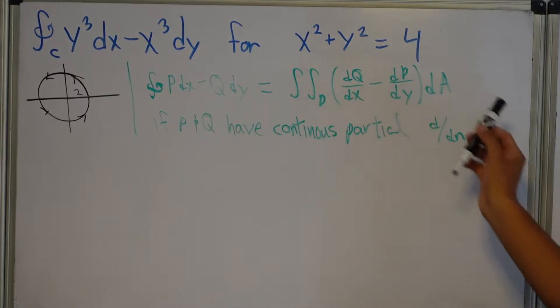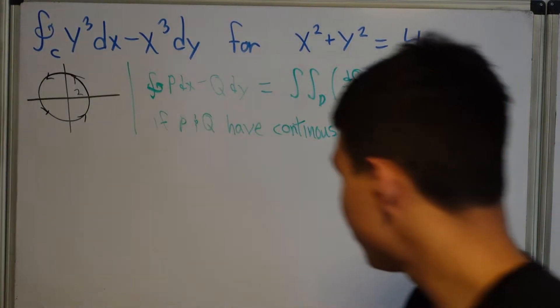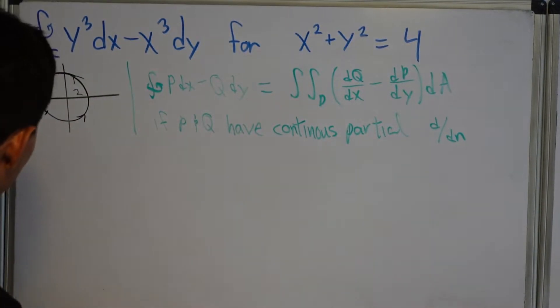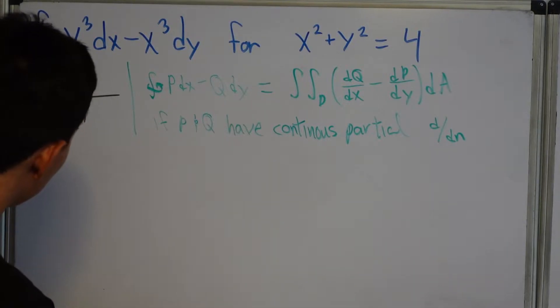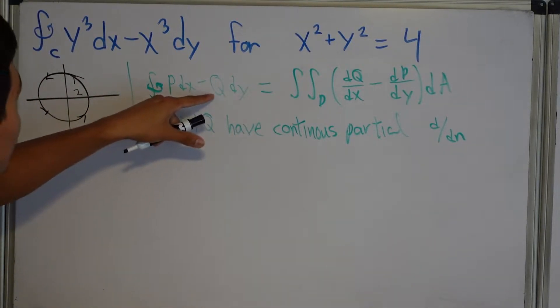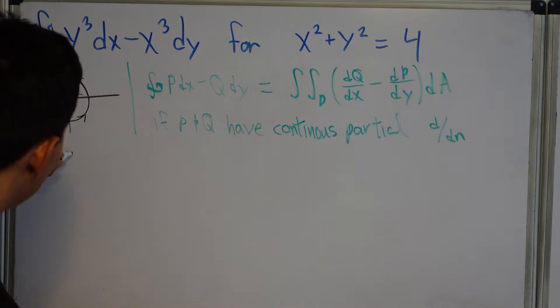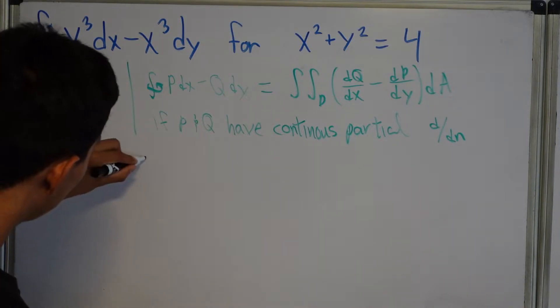Okay, so let's actually use this to integrate. So Q, what is Q? Q is the second one, so Q is negative X cubed. Okay.